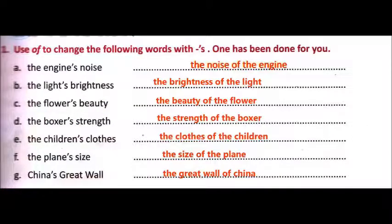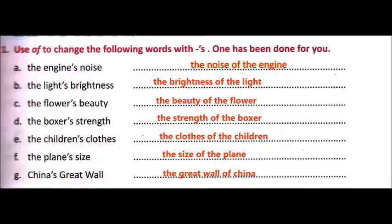Now our first exercise is: use 'of' to change the following words with apostrophe S. One has been done for you. As we have seen, there are two ways to write the sentence to show the position of the thing. The sentence is given with apostrophe S and now you have to write it the second way — using 'of'. So the first sentence is 'the engine's noise' — with 'of' you write 'the noise of the engine'. Both sentences convey the same meaning — the noise of the engine.